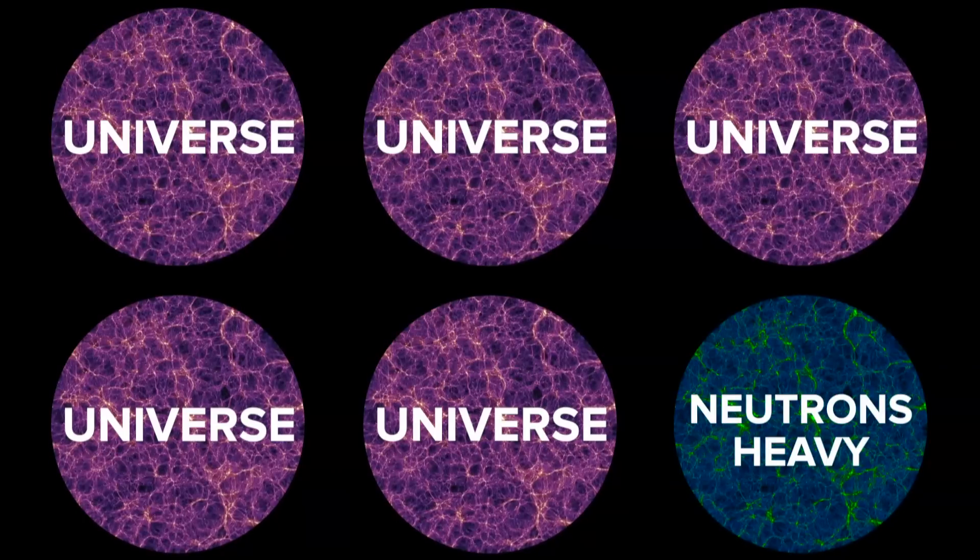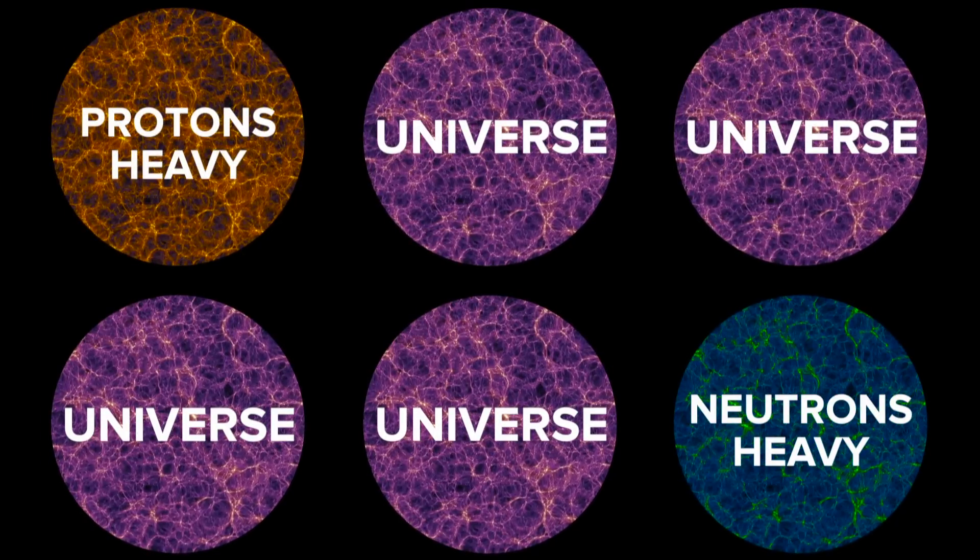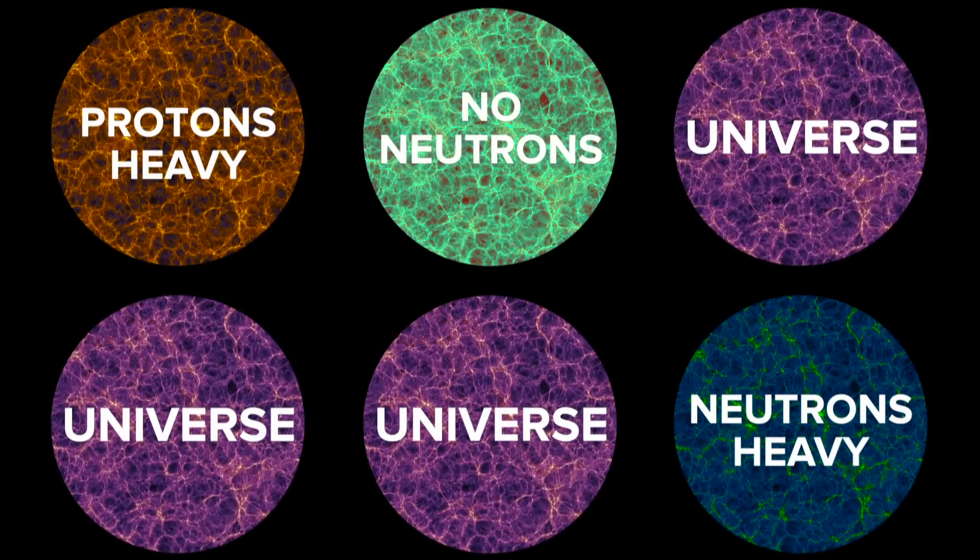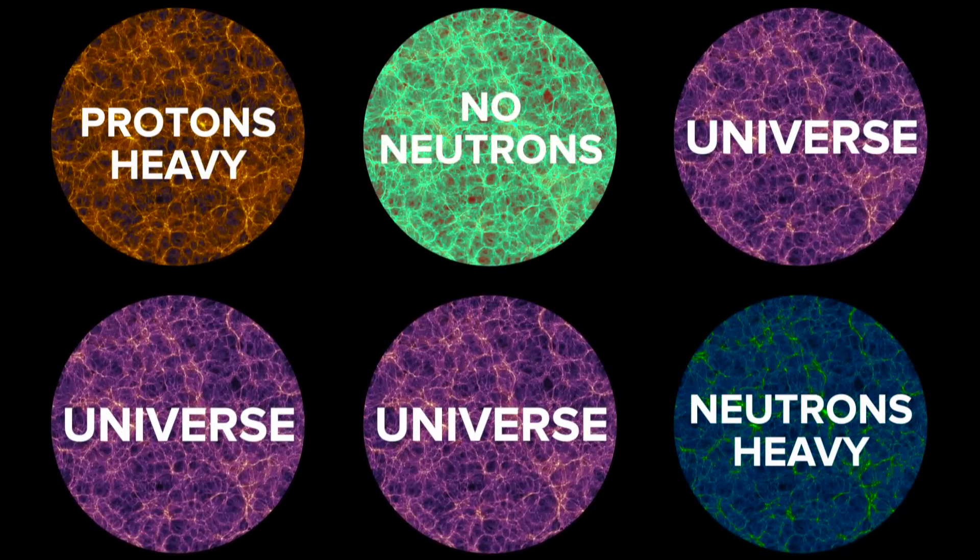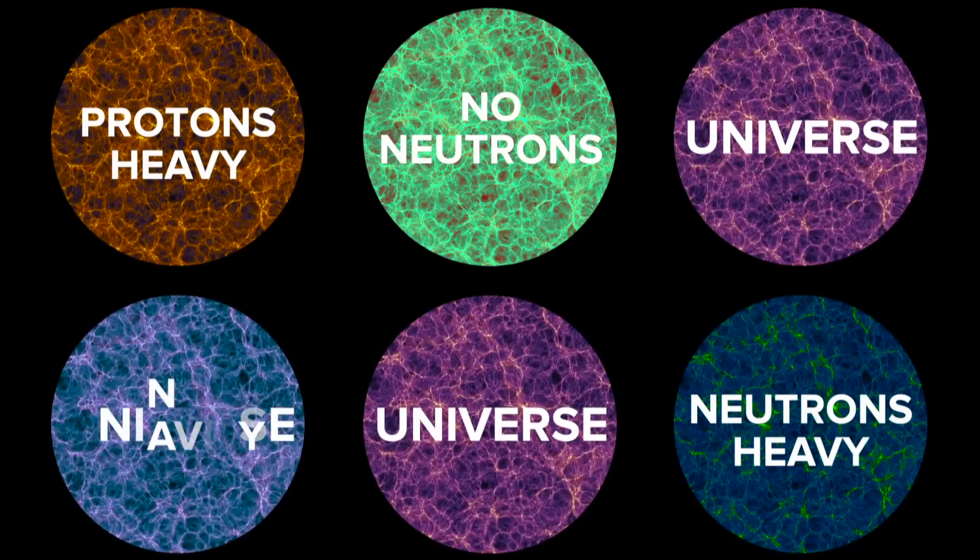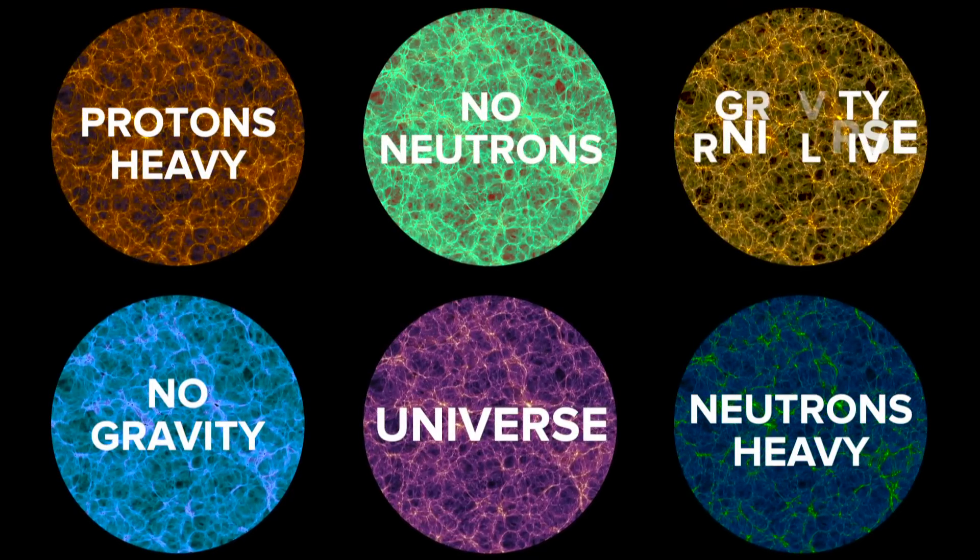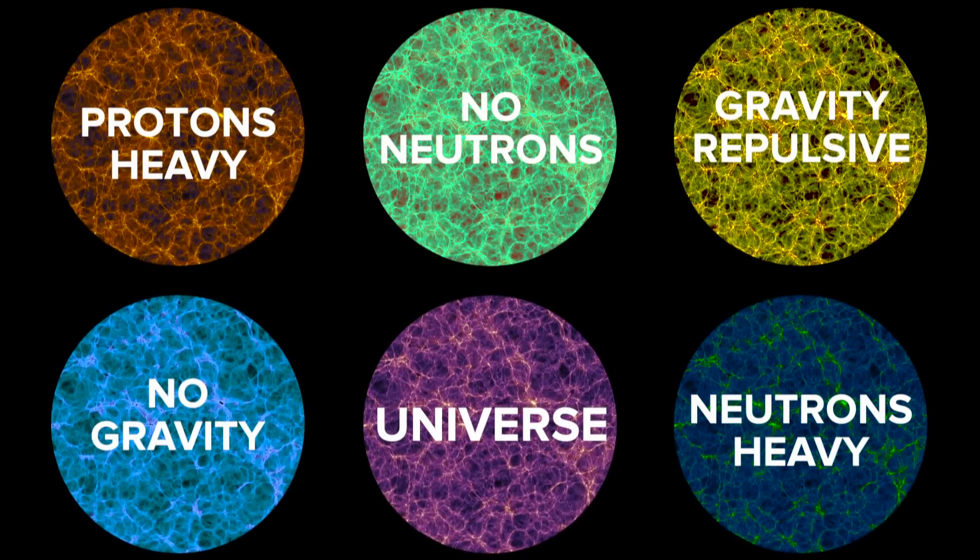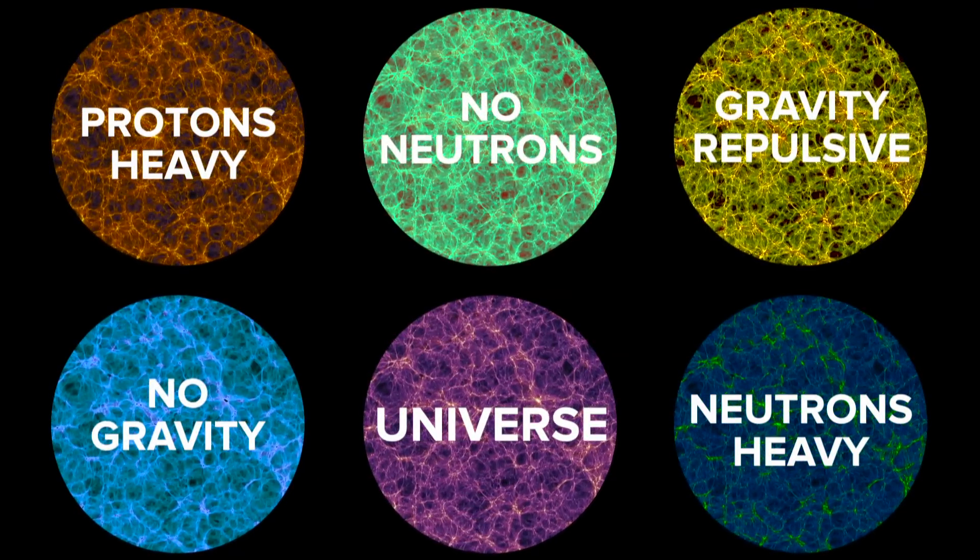In some, neutrons might not exist at all. And the list of possible variations goes on much more than that. In some universes, gravity may not exist, or maybe gravity is a repulsive force. Everything that can happen does happen in at least one universe.